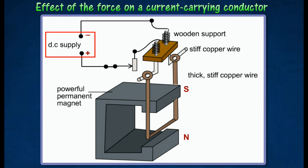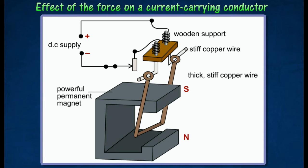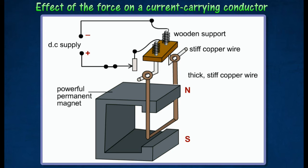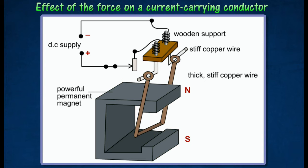If the current flowing through the copper wire is reversed, the copper wire will move to the left-hand side. This shows that the force acting on the wire also depends on the direction of the current. Similarly, if the polarities of the magnets are reversed, the copper wire will move to the left-hand side when the switch is turned on, showing that the force also depends on the direction of the magnetic field.